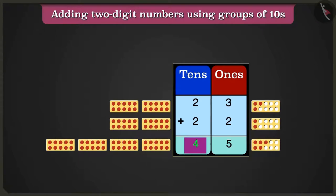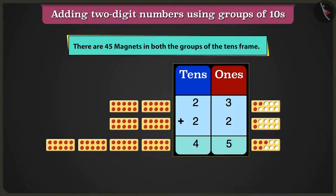So here there are 4 tens and 5 ones. Therefore, in both groups of the tens frame, there are 45 magnets altogether.